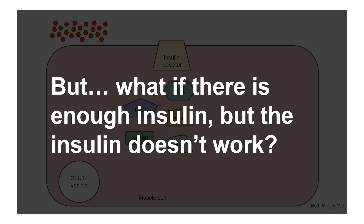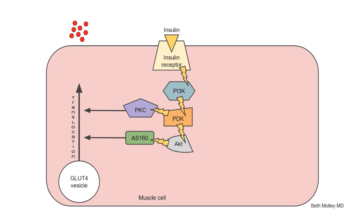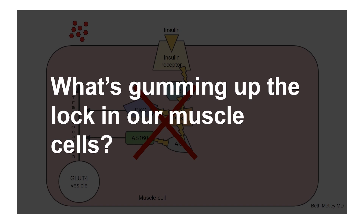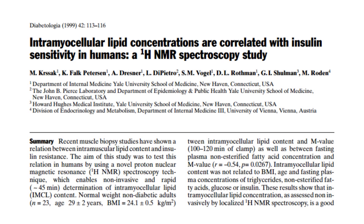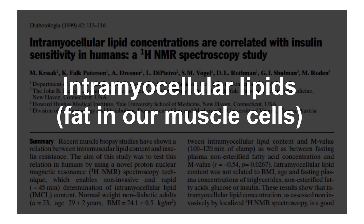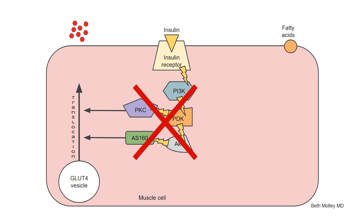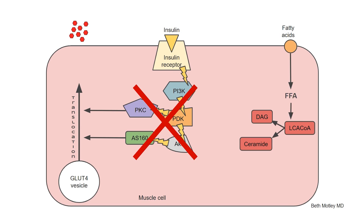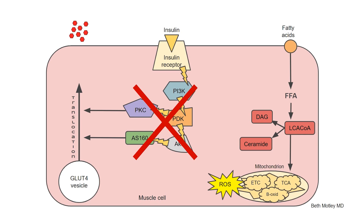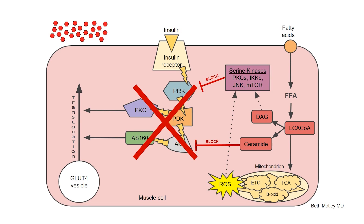But what if there is enough insulin, but for some reason the insulin doesn't work? In this scenario, we have the key to unlock the door — it looks like all the players are in place — but something is gumming up the lock in our muscle cell. What's gumming up the lock? It's intramyocellular lipids, or fat in our muscle cells. In response to a high fat diet, those fatty acids in the bloodstream enter the muscle cell, break down into free fatty acids and toxic breakdown products that together block the insulin signaling pathway.